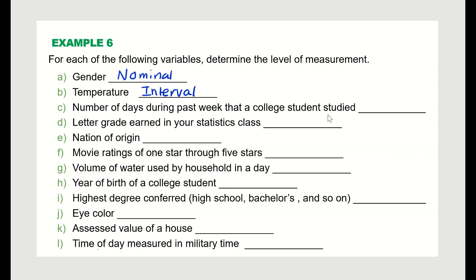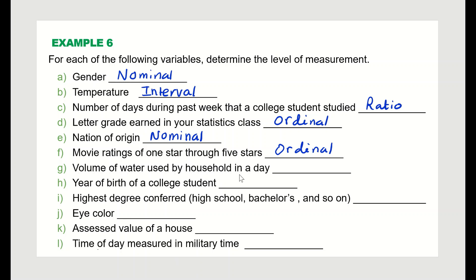Letter grade in a stats class is a rank but the difference does not make sense, so that is ordinal. Nation of origin does not involve any number, so that is nominal. Movie rating of one to five stars is a rank where differences don't carry consistent meaning, so that is ordinal. Volume of water used by a household in a day is a pure number where zero has real meaning and ratios are defined, so that is ratio.